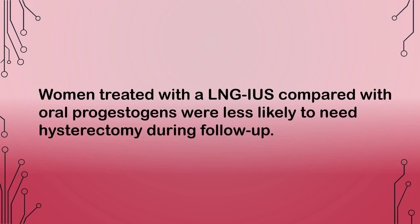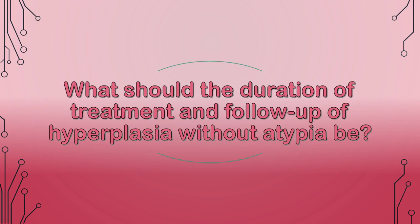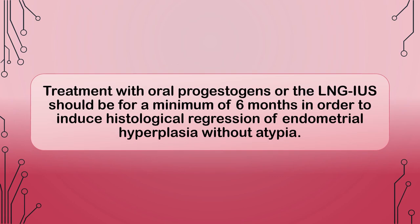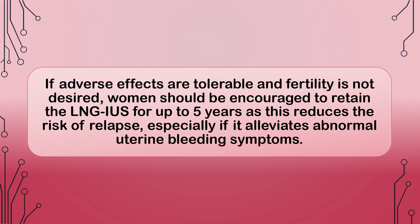Women treated with a LNG-IUS compared with oral progestogens were less likely to need hysterectomy during follow-up. What should the duration of treatment and follow-up of hyperplasia without atypia be? Treatment with oral progestogens or the LNG-IUS should be for a minimum of 6 months in order to induce histological regression. If adverse effects are tolerable and fertility is not desired, women should be encouraged to retain the LNG-IUS for up to 5 years as this reduces the risk of relapse, especially if it alleviates abnormal uterine bleeding symptoms.